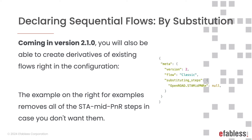You can declare a custom sequential flow for your design right in your config. Here's an example of a declarative flow for an inverter — we've trimmed the flow down from 70+ steps into 18 steps, as many steps are not required for such a simple design. And coming in version 2.1, you will also be able to create derivatives of existing flows right in the configuration — for example, removing all the mid-PNR STA steps, which are not essential and only used for traceability but can take a lot of time on larger designs.